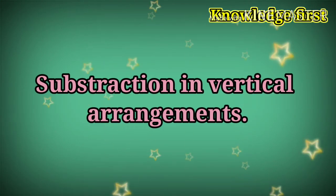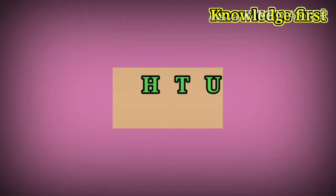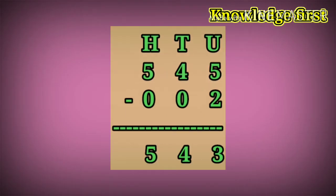Subtraction in vertical arrangements. Vertical arrangements manje ubhimandni. 545 minus 2. Let's start the subtraction. 5 minus 2 is equal to 3. 4 minus 0 is equal to 4. 5 minus 0 is equal to 5. Answer is 543.